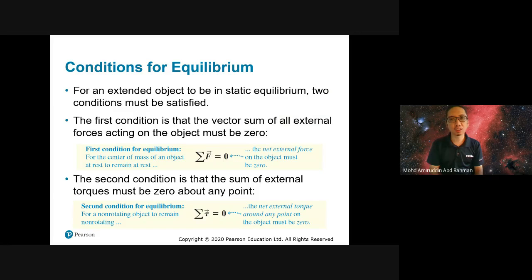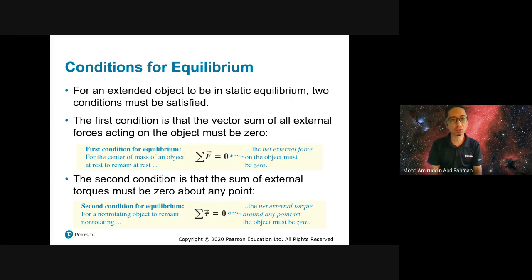We have the conditions for equilibrium. There are two conditions that must be satisfied: first, the total force must be zero, and second, the total torque must also be zero. Those are the two conditions for equilibrium.